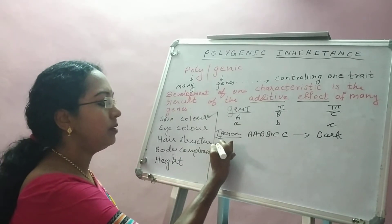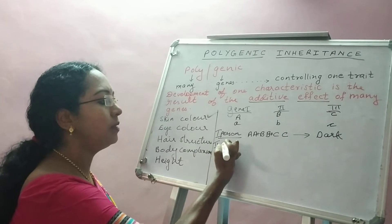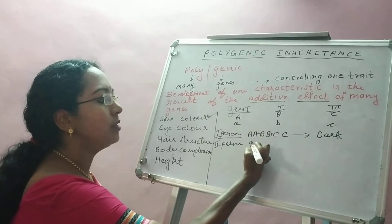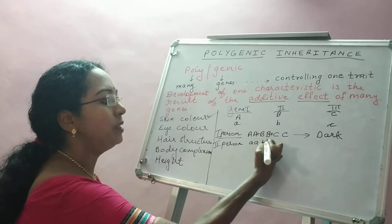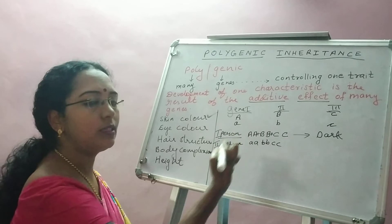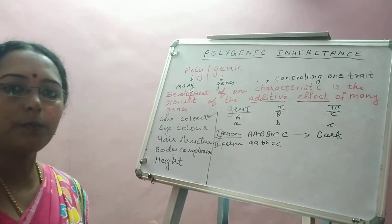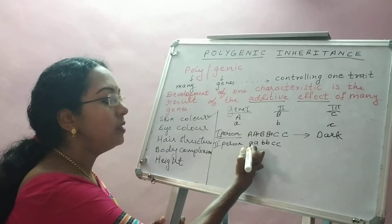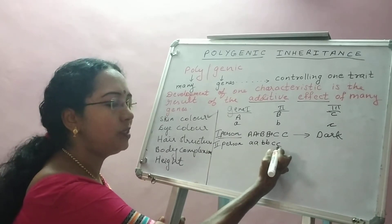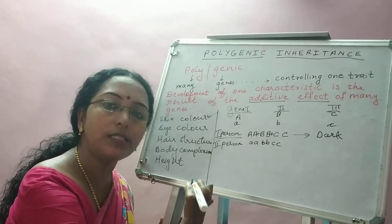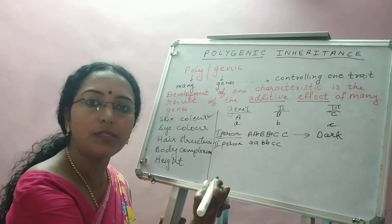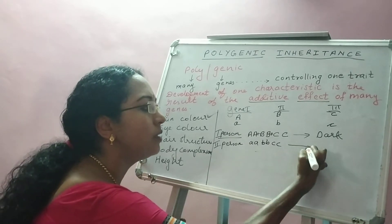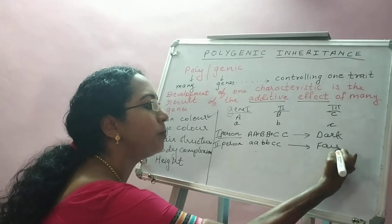In the second case, this person has small a small a, small b small b, small c small c. These alleles are less efficient in producing the pigment — they do produce it, but are less efficient. So if you take the total, the person will have a fair complexion, since pigments are not produced as much as in the first case.